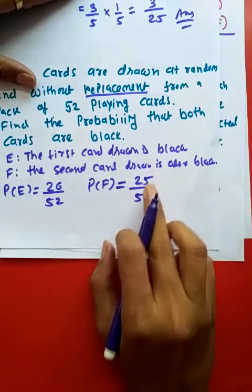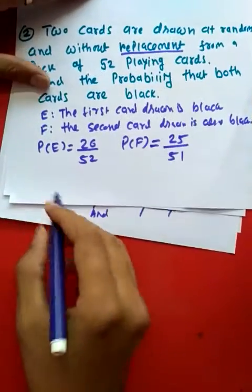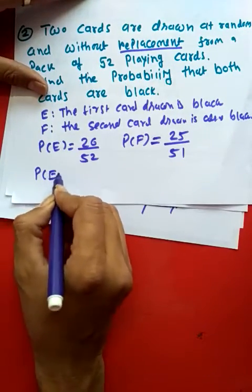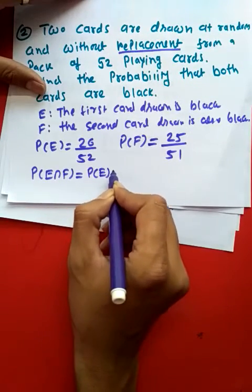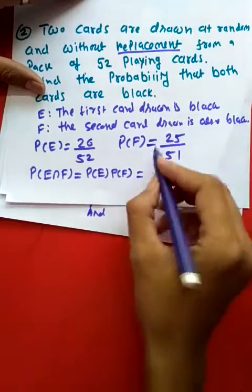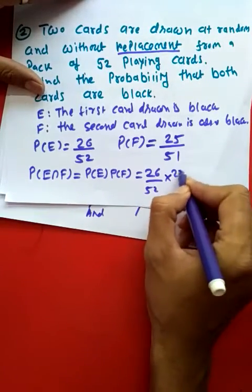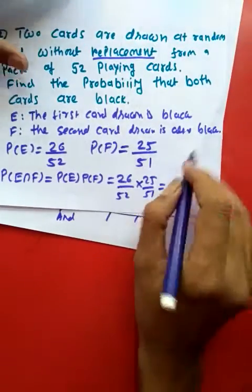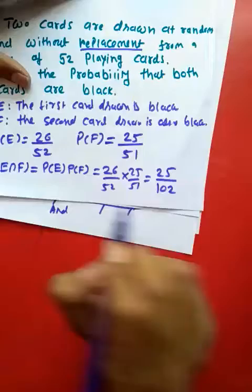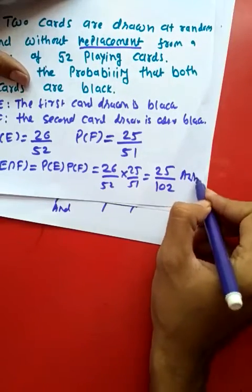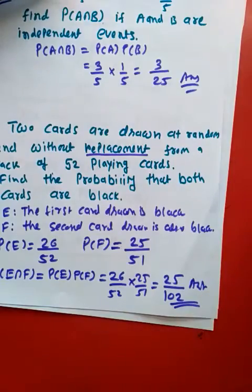Now, as you know, it is an independent event, so P(E∩F) can be given as P(E) into P(F), and you will get the answer as 25/102. So this is your answer.